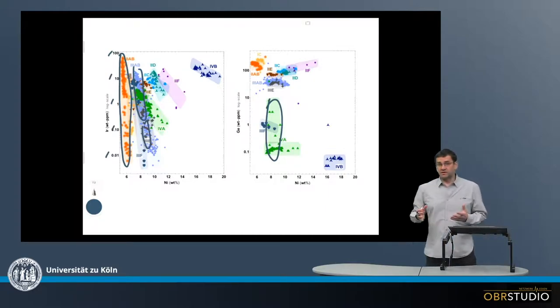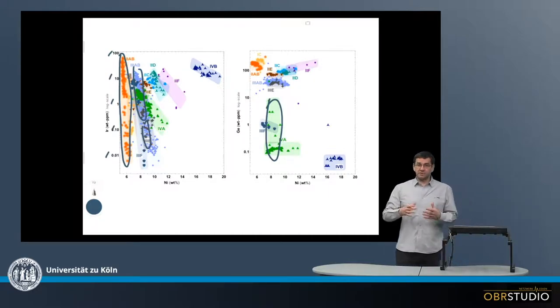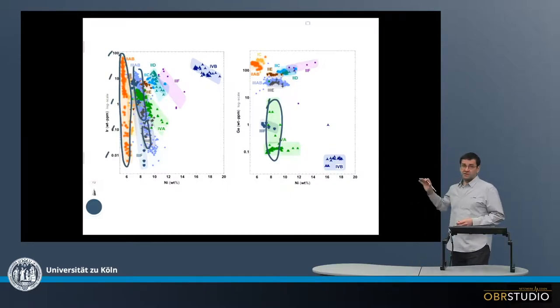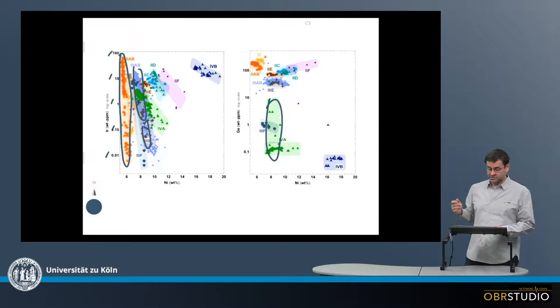The reason for these large ranges is fractional crystallization. All the iron meteorites were once molten and crystallized, and due to the various partition coefficients, these variations in their trace element concentrations were established.